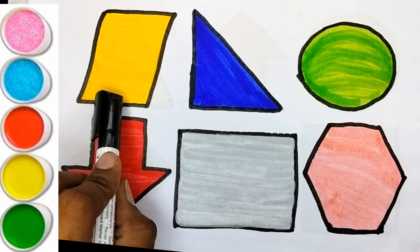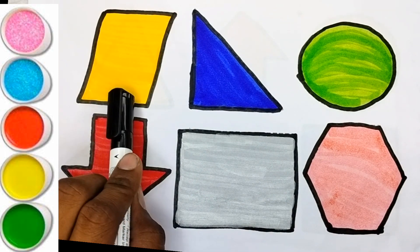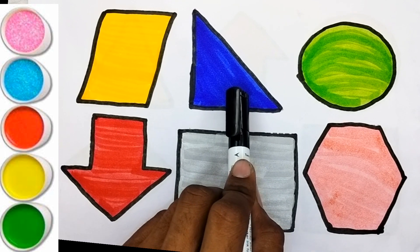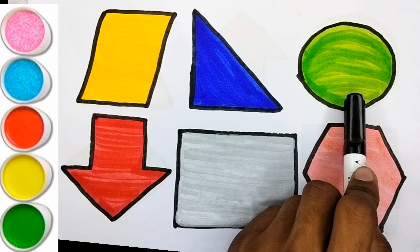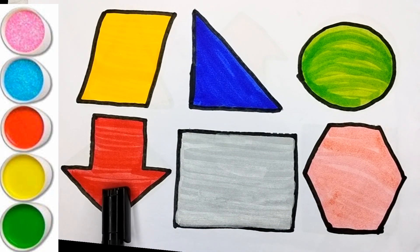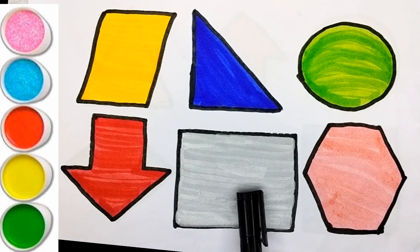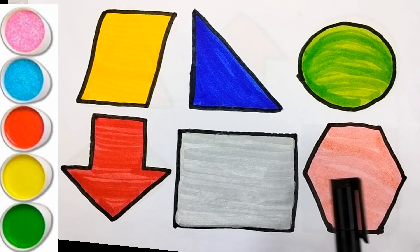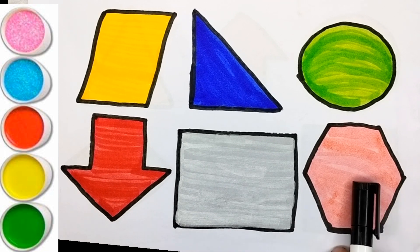Yellow color parallelogram, blue color right triangle, green color circle, red color down arrow, silver color rectangle, pink color hexagon.